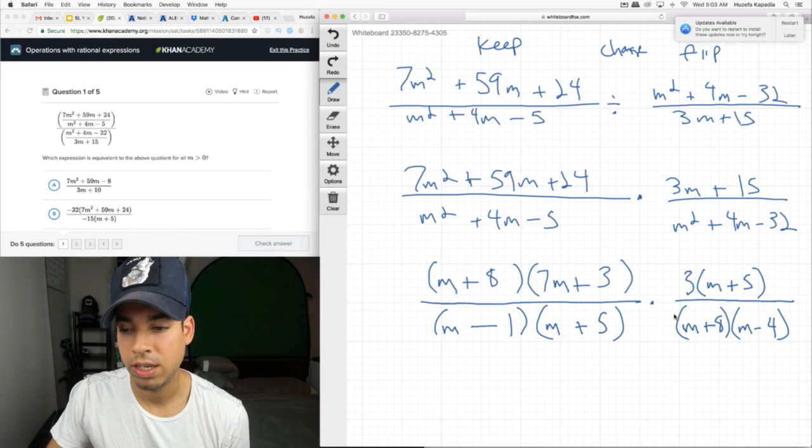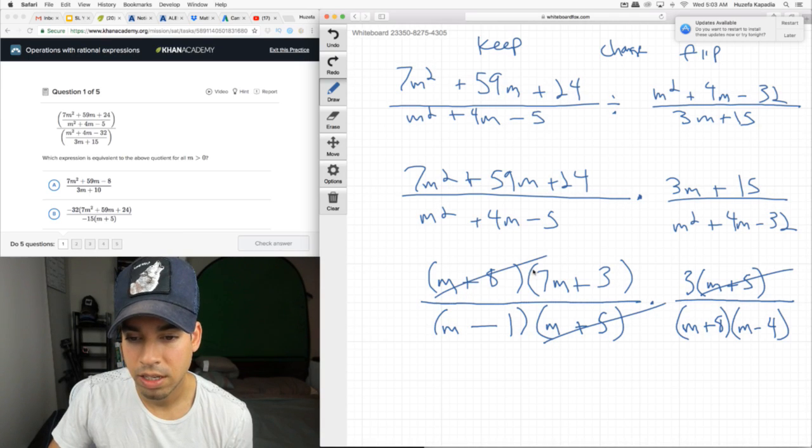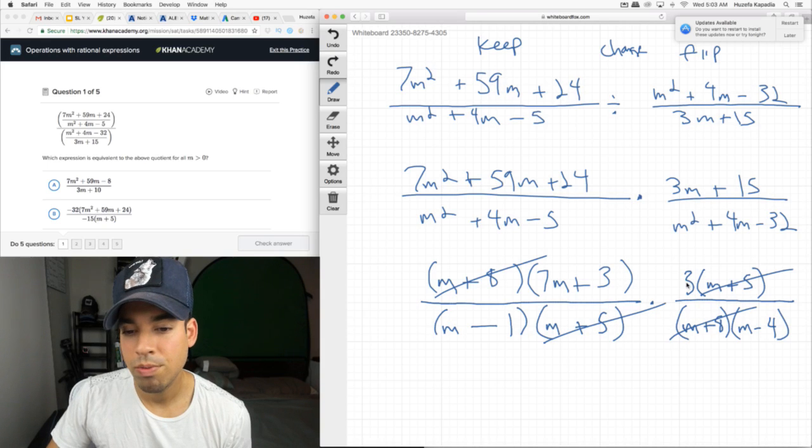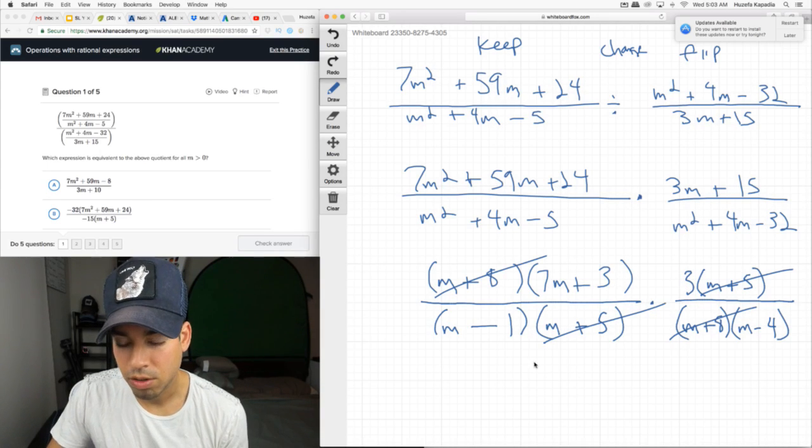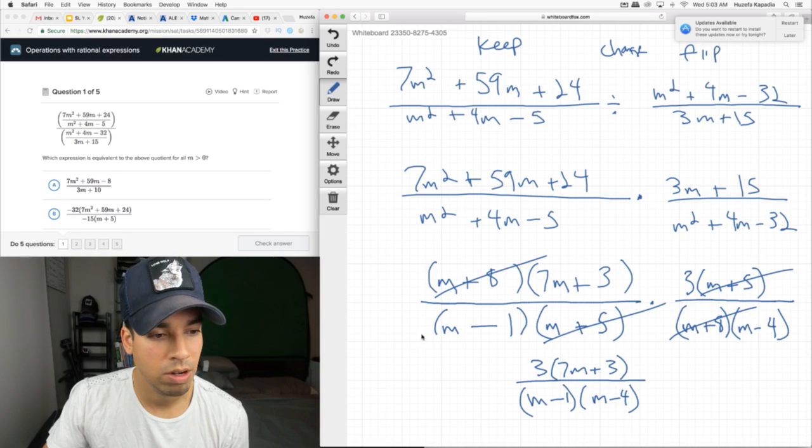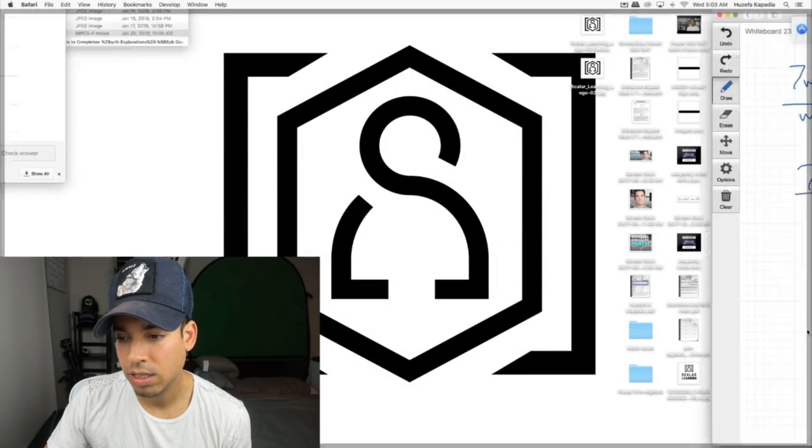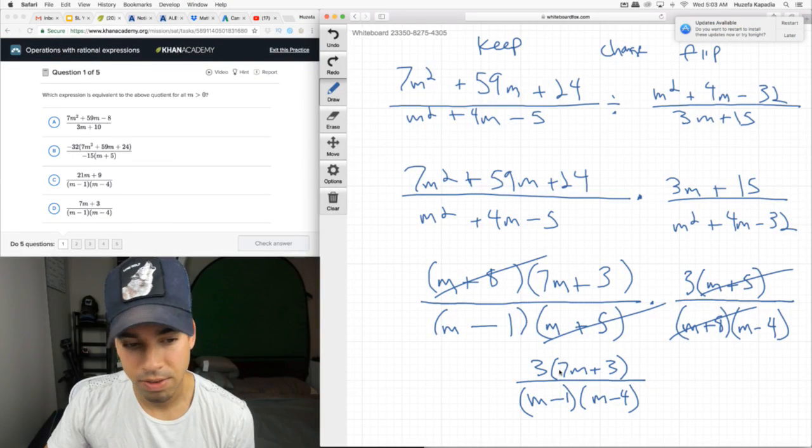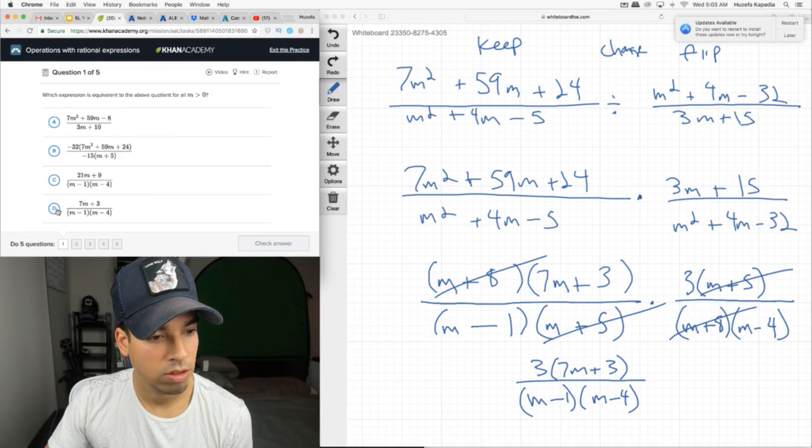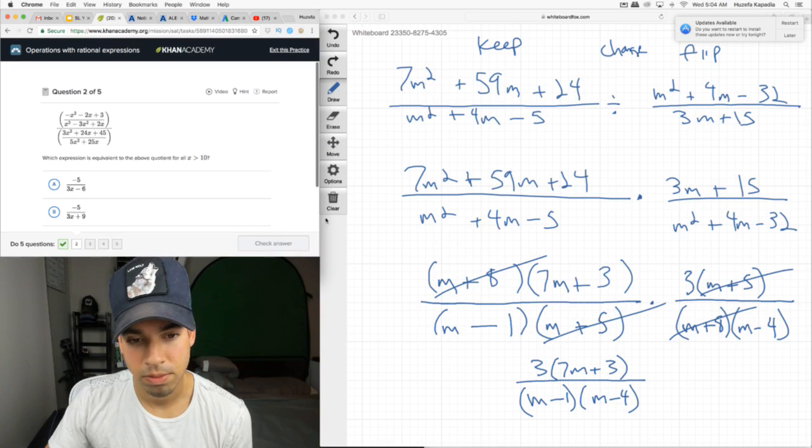Now, it's factored. Now, we cross simplify. If we can. And it looks like we can because we got an M plus 5 on the top and bottom. Boom. Boom. We got an M plus 8 here and here. And that's about it. So, now when we consolidate everything, it becomes 3 times 7M plus 3 on top over M minus 1 times M minus 4 on the bottom. We can't do any better than that. And that should be our answer. Let's see what we got over here. It looks like it's C because what they did was they distributed this 3 into the 7M and into the 9. There's our answer. Boom. Dunzos.